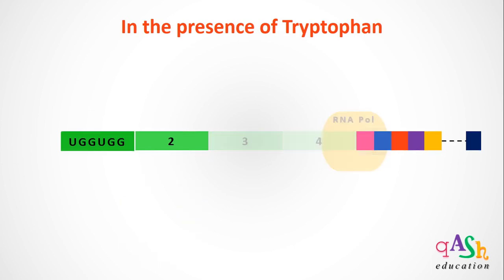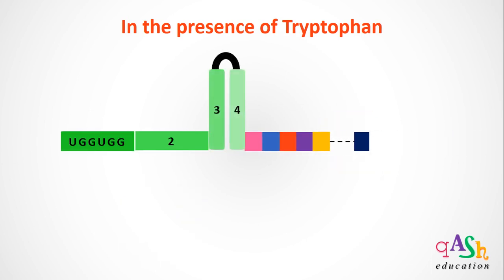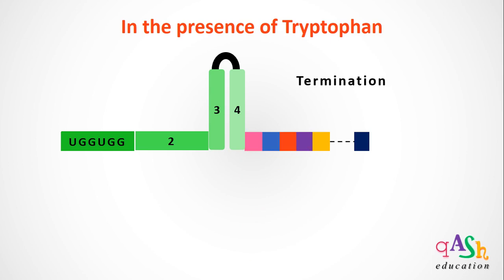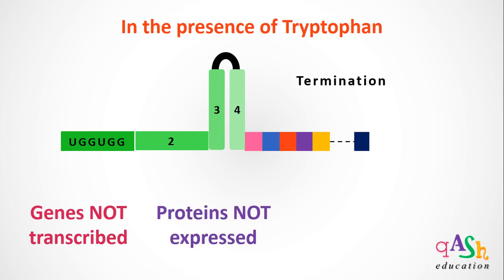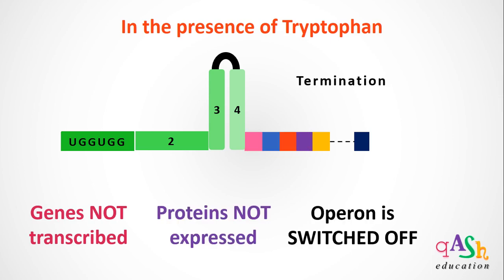This gives time for segments 3 and 4 to combine together via complementary base pairing forming the hairpin loop structure. The hairpin loop structure between 3 and 4 conveys the signal for termination of transcription, allowing RNA polymerase to detach and fall off the site. Thus, in the presence of tryptophan in the media, the genes are not transcribed, the proteins are not expressed, and the operon is therefore switched off.